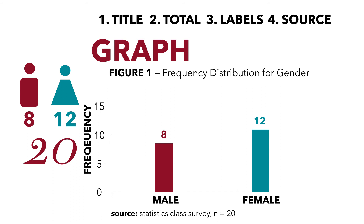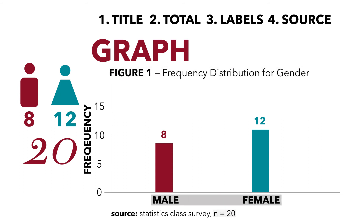We've now completed our graph. We can visually see very quickly that there are more females than males — 12 females versus 8 males. Our graph has all the features we need: a title, a total, labels, and a source. We have all the components we need.